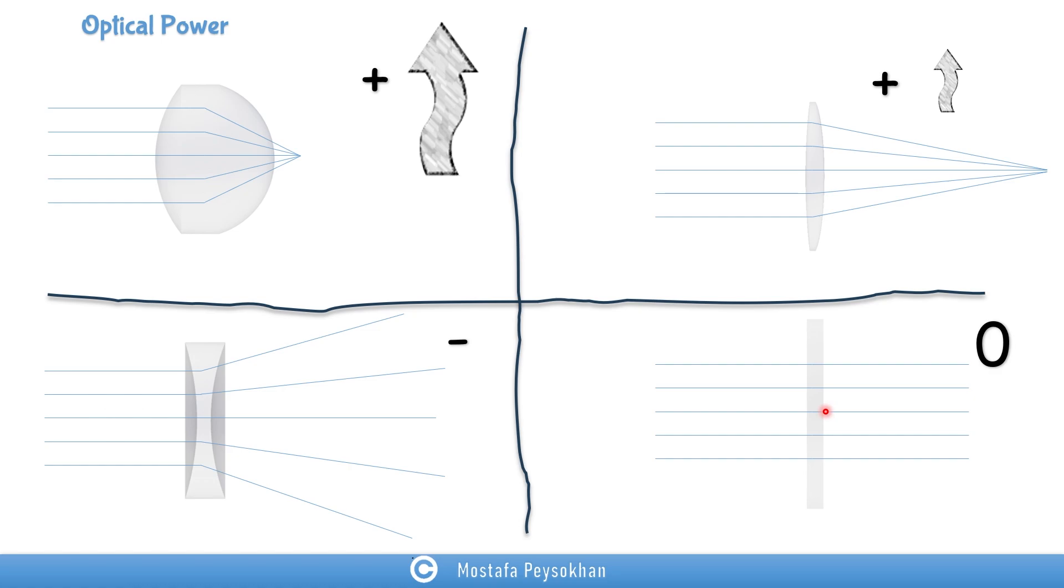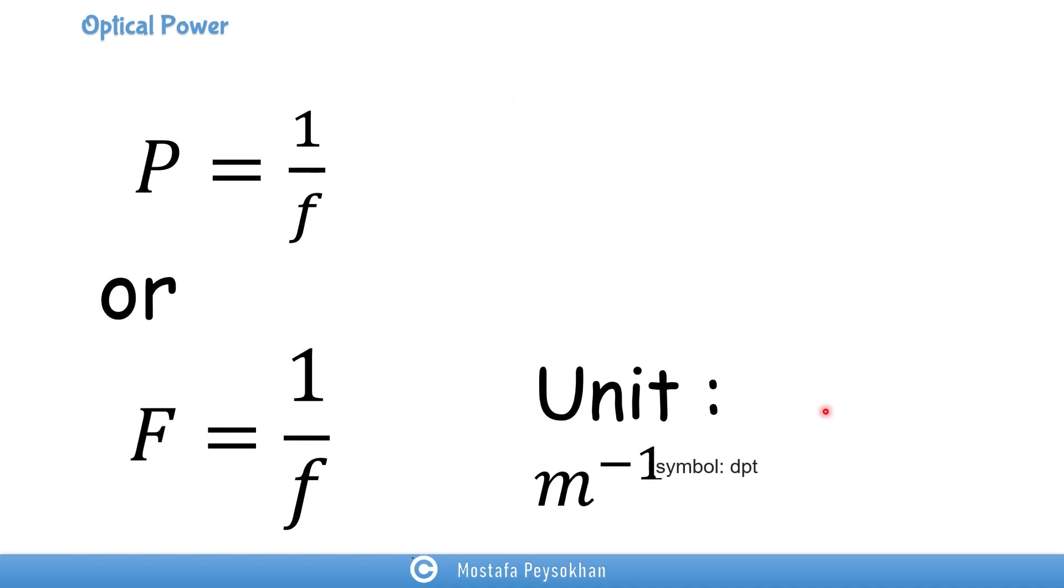And the equation that we have for optical power is equal to one over f, and f is the focal length. As I mentioned before, let's say you have a lens, when the focal length is short, it means that it has a lot of power. So when the focal length is short, it means that this number is small, then the optical power goes higher.